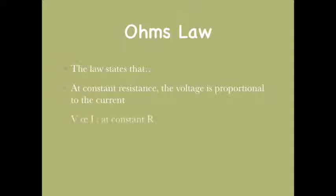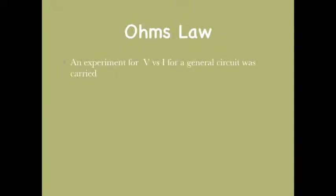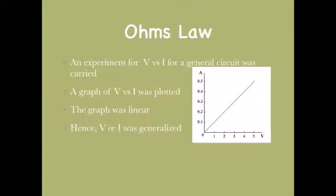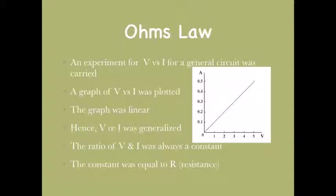Coming to Ohm's law — a very important part of this lesson. The law states that at constant resistance, voltage is proportional to current. Mathematically, V is proportional to I at constant R, giving V equals IR. Sir Ohm conducted an experiment where a graph of V versus I was plotted and found to be linear, confirming V is proportional to I. The ratio of V and I was always constant, equal to the slope R. This is how the formula was developed.